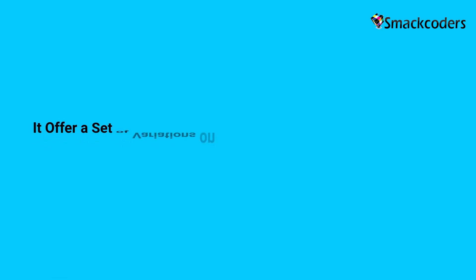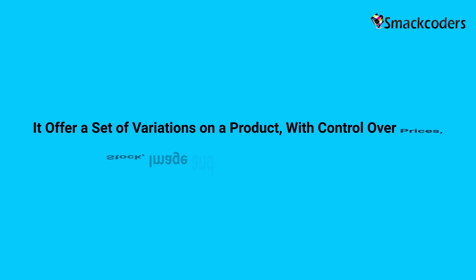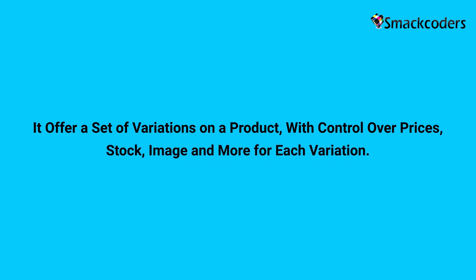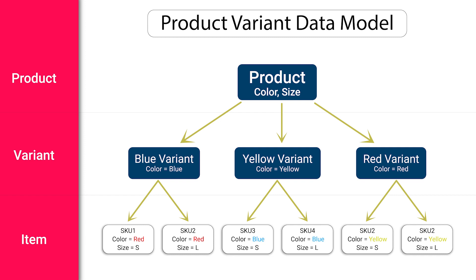We can provide product variation for a WooCommerce product, but the product should be assigned as a variable product in product data type. For this type we can give attributes like color, size, style, materials, price, and other attributes.